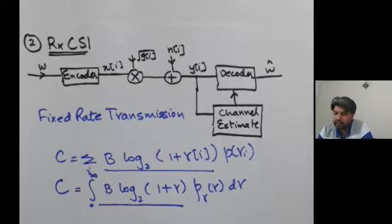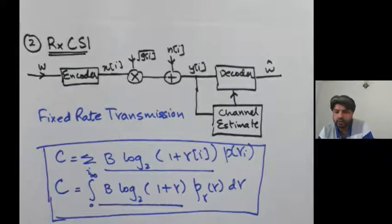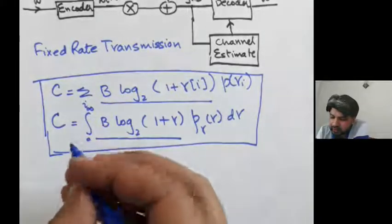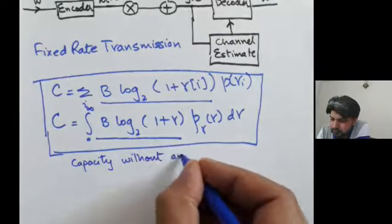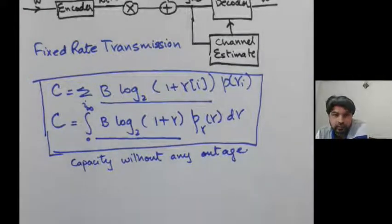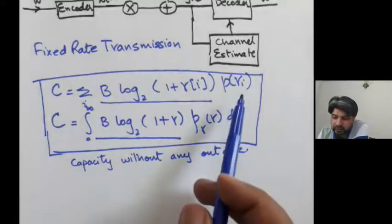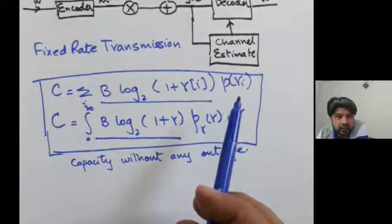You can probably already see that this capacity does not allow any outage — no matter what the channel state is, you are carrying out transmission in that state. This is called capacity without any outage. But if you do not allow any outage at all, you have to take care of the worst possible channel states, which can severely decrease your capacity. You end up averaging over all states, including those that are really bad and hurt your maximum data rate.